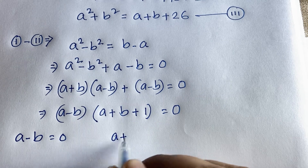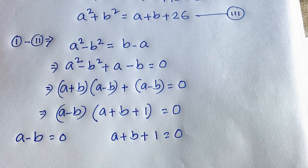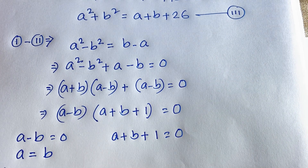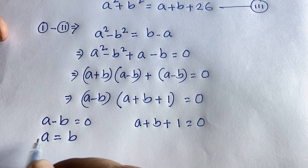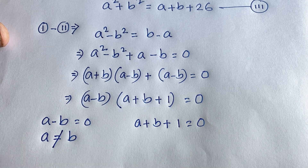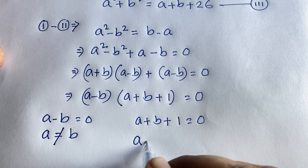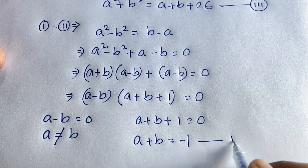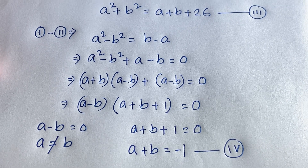This gives us two cases. The first case is a minus b equals 0, meaning a equals b. But remember the condition states a is not equal to b, so we reject this case. The second case is a plus b plus 1 equals 0, which means a plus b equals negative 1. This is our fourth equation.